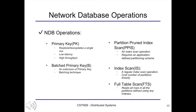The second operation is the batched primary key operation. It is an extension to the primary key operation which leverages the batching technique. Batching techniques are used in traditional databases to provide higher throughput at the cost of higher latency by making efficient use of network bandwidth. The third operation is the partition-pruned index scan. This operation is an index scan local to a single NDB partition and requires an application-defined partitioning scheme. NDB ensures that rows with the same partitioning key always reside on the same partition.